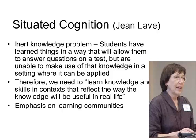We need to learn knowledge and skills in contexts that reflect the way the knowledge will be useful in real life. Context is everything in situated cognition. There's also an emphasis on learning communities, talking to people and interacting with other learners as part of the learning process. It still involves the knowledge we talk about in other chapters, but it's knowledge learned in context rather than just in the classroom.